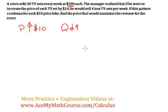If this pattern continues for each $10 price hike, meaning that if he increases the price by $20 the quantity goes down by 8 and so on, find the price that would maximize the revenue for the store.